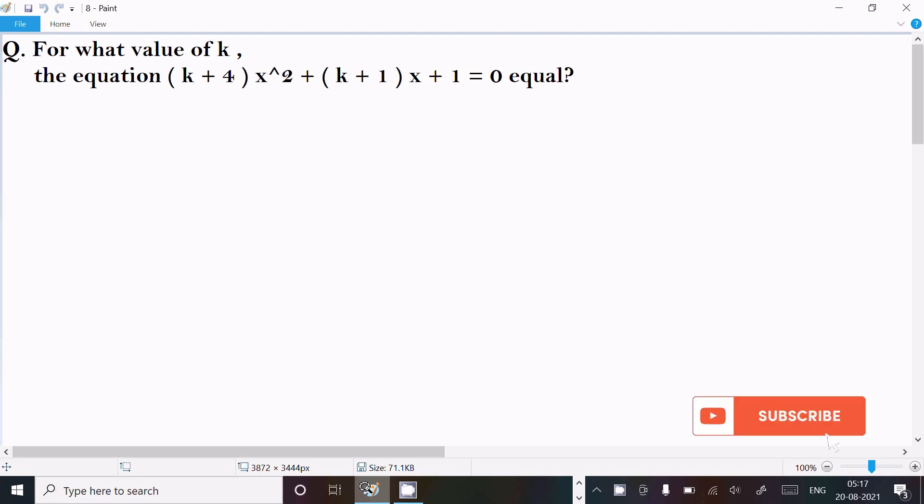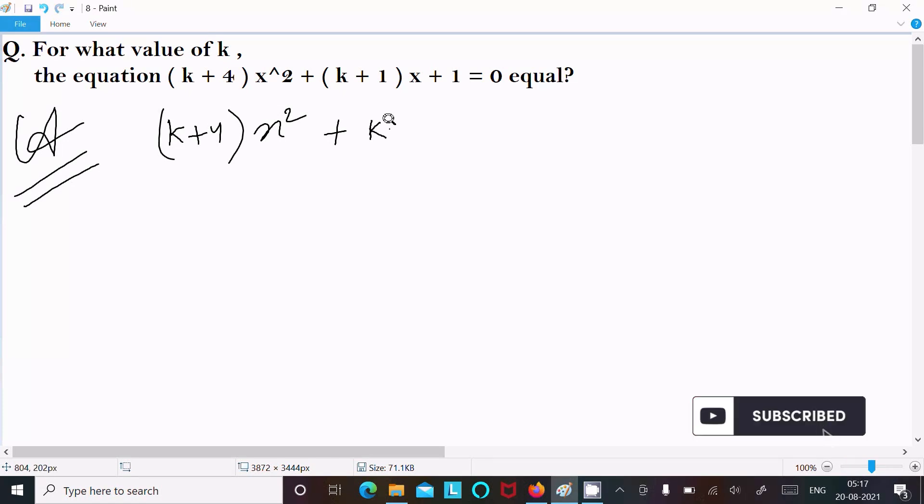Next, I am going to find the value of k for the equation (k+4)x² + (k+1)x + 1 = 0 that has equal roots. Let's see the answer. First, writing the given equation: (k+4)x² + (k+1)x + 1 = 0.